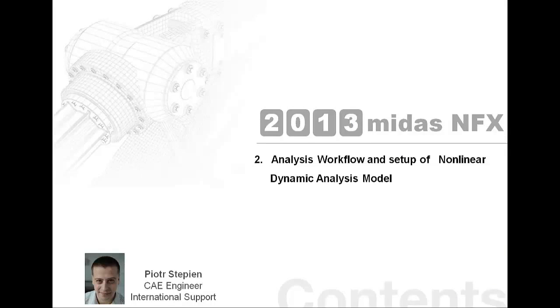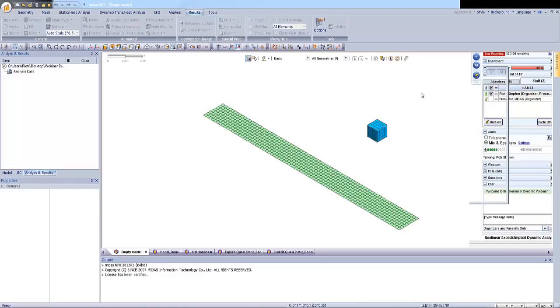Okay, now I will show you the example about how to use MIDAS-NFX in implicit dynamic problems. So I will switch to the software. So you see the simple model which consists of plate and block. So we will start to add parameters to this model. And we will perform a free-fall example. And so this example will show you the slow dynamic problem.